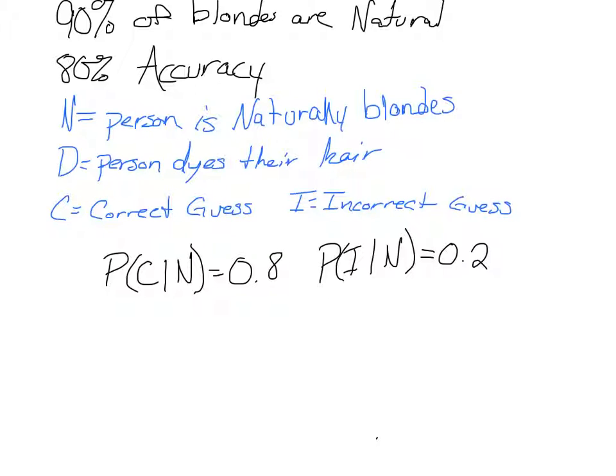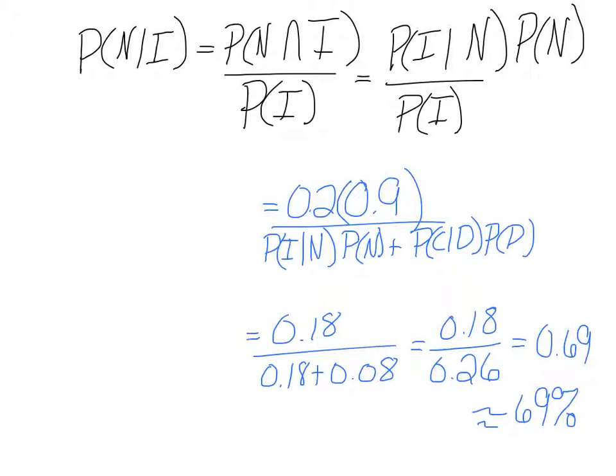Then a correct and incorrect guess. We have the probability that you're guessing correct given that the person is naturally blonde is 80% of the time, and then if you're incorrect given they're naturally blonde it's 20% of the time.